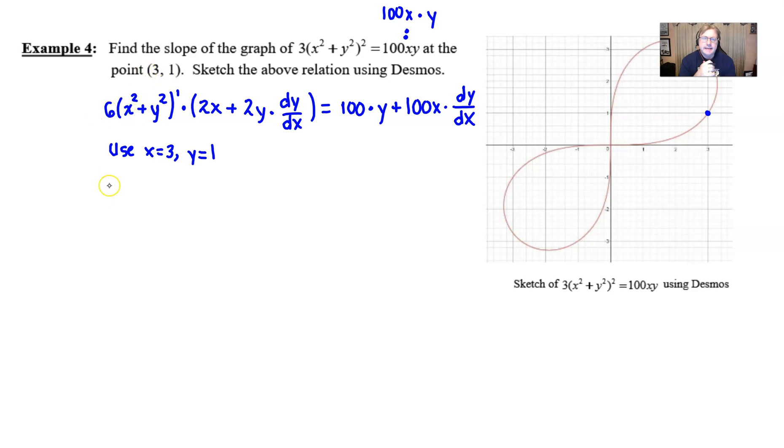So if we let the x be 3 the 6 will drop down and of course and then the 3 squared would become a 9 and the 1 that places itself in for the y's position squared would become a 1. Don't need to write that power of 1 so I won't do that. 2 times the x or 2 times the 3 is 6 plus 2 times the 1 is 2 and then we have our dy/dx there and that completes the left side. Do the same thing on the right side let y be 1. 100 times 1 is 100 plus 100 times 3 would be 300 and then we have our dy/dx.